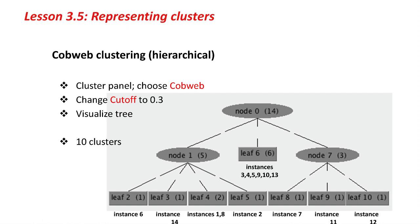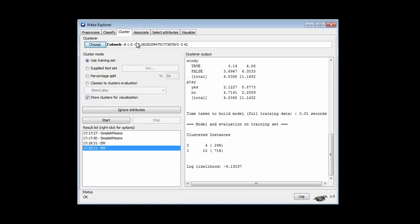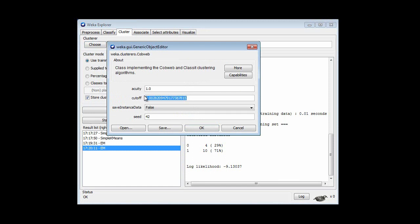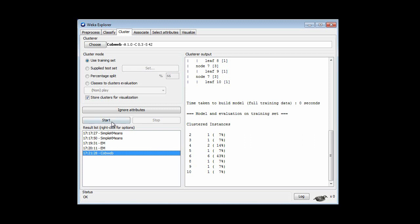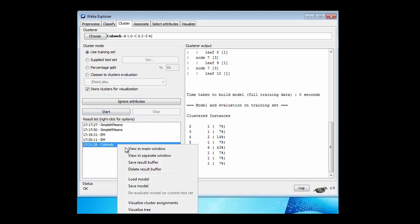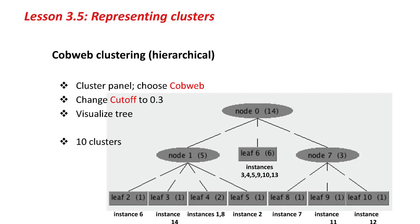Let's look at one final clustering method — a hierarchical clustering method called Cobweb. Back in Weka, let me run Cobweb. It has some parameters — I'm going to choose 0.3. Using Cobweb is a bit of a black art. I'll run it and visualize the tree from the right-click menu. This is the tree we get for the weather data, with 10 clusters. You can see these clusters at the bottom level, then clusters at the level above, and then one cluster at the very top.